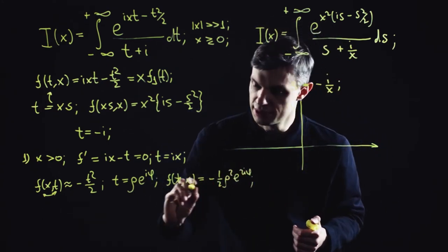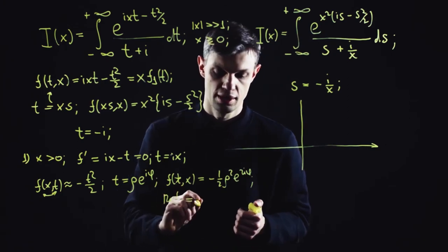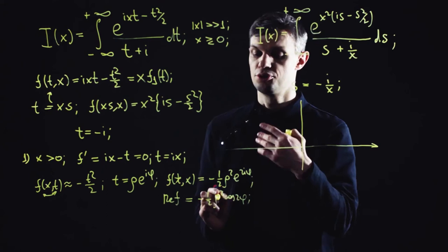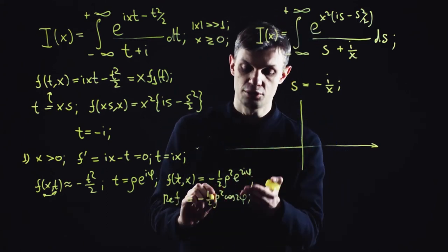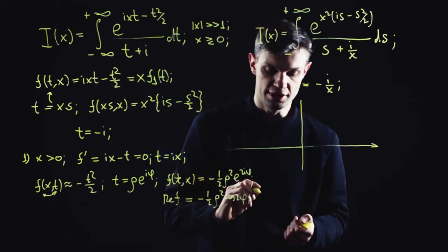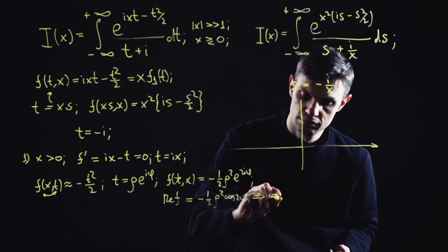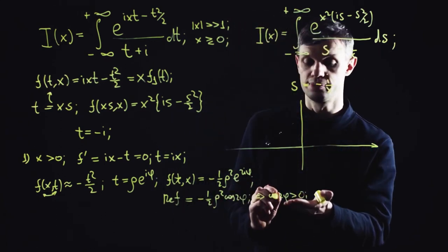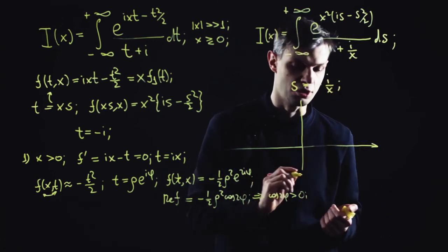And its real part, so the real part should be large and negative, meaning that the cosine of 2 phi should be positive. Since rho is large, we can solve this elementary trigonometric equation.